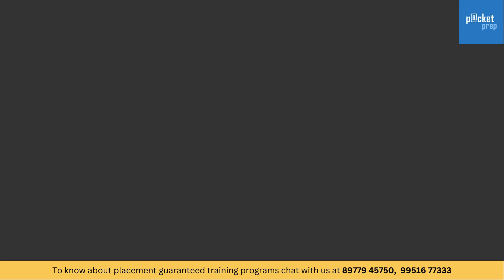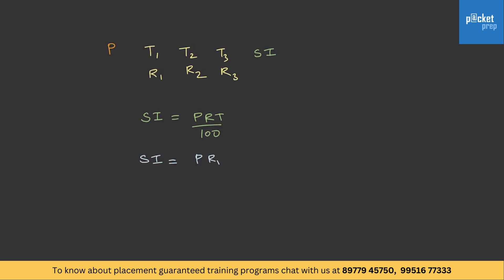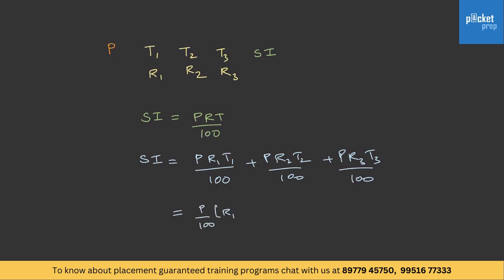Now let's get into Type 3 — different interest rates for different years. In this category we are given a principal, and for time period T1 the rate is R1, for T2 it is R2, for T3 it is R3, and so on. We can calculate interest independently for each period and add them. The formula becomes: SI = (P/100) × (R1T1 + R2T2 + R3T3).